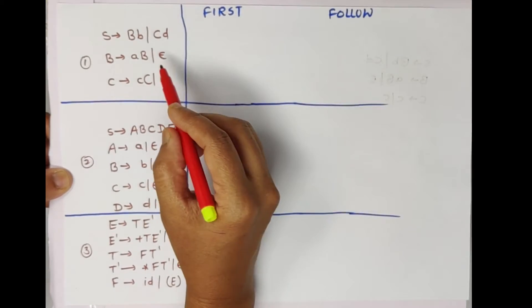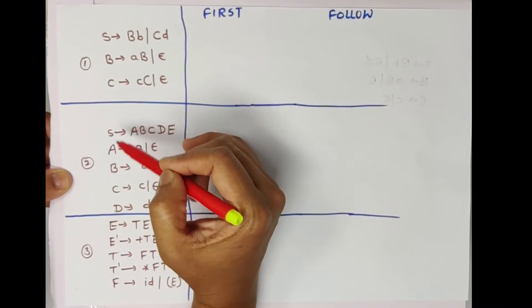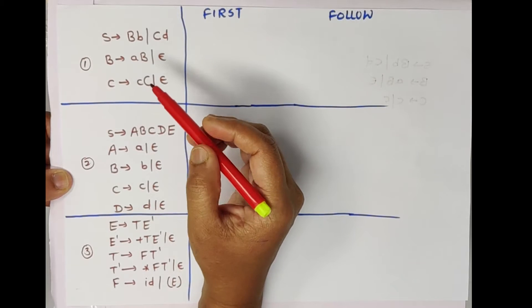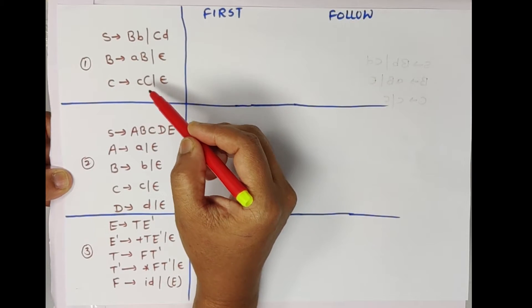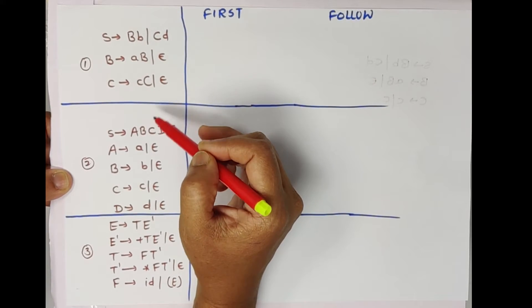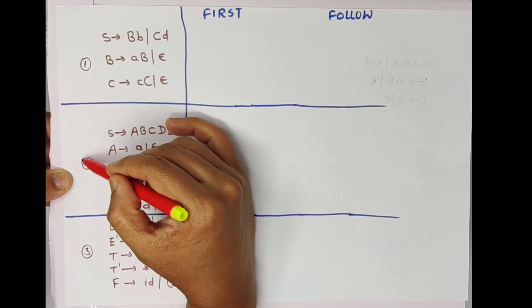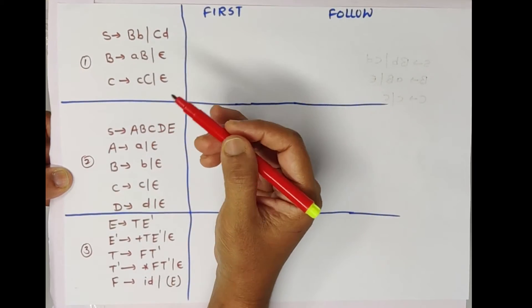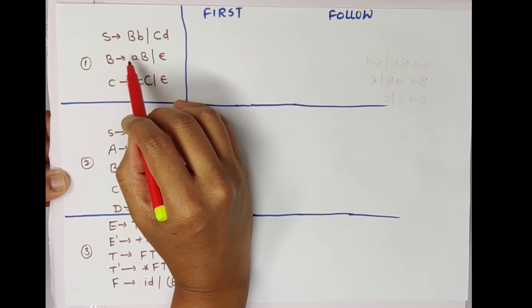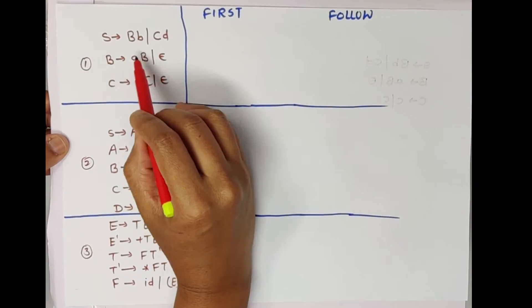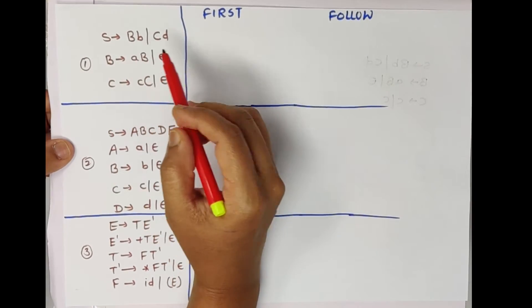In this example, there are three examples we have taken so that all rules will be covered and we can understand properly. So the first example — this is the first example.